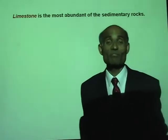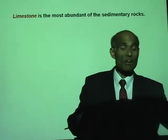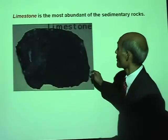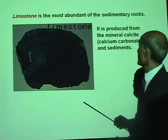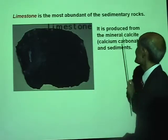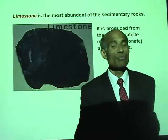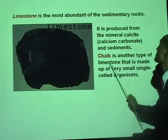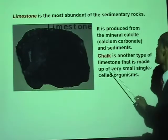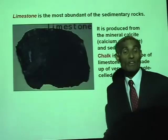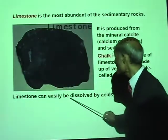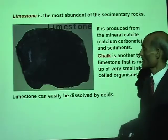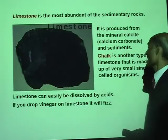Another type of sedimentary rock is limestone — the most abundant sedimentary rock. It is produced from the mineral calcite and sediments. Chalk is another type of limestone — actually a form of limestone made up of very small single-celled organisms. Limestone can easily be dissolved by acids; if you put a drop of acid or vinegar on limestone, it will fizz.